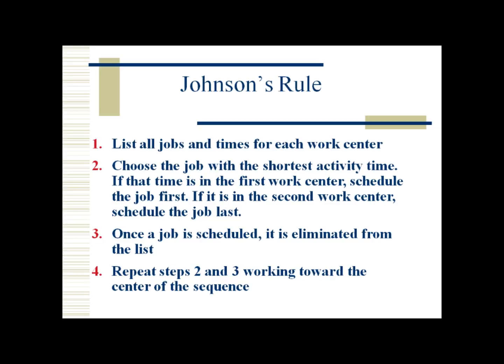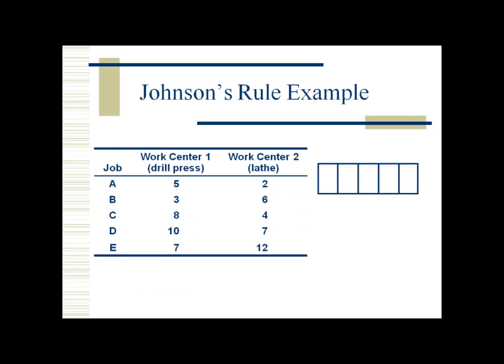So the process continues filling in the next smallest number until we complete all the slots for the job sequence. For the given example, we have five jobs — A, B, C, D, and E — and they are going to be performed sequentially into two machines: work center one and work center two. The following information is given in hours, and the boxes on the right side of the screen are what we will fill in later, giving us the optimal sequence that minimizes idle time.